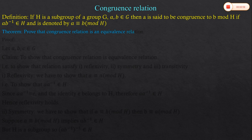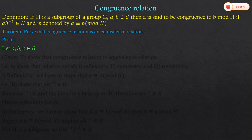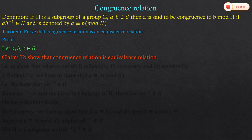This relation is called the congruence relation, and we have to prove that this relation is an equivalence relation. So let us start the proof of this theorem. We need three elements from group G — let a, b, and c belong to G. Our claim is to show that the congruence relation is an equivalence relation.